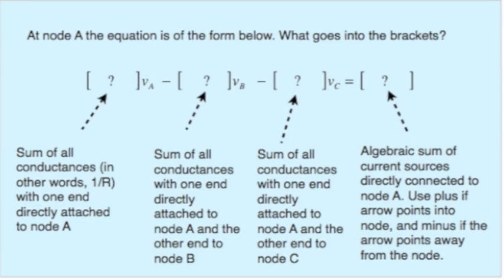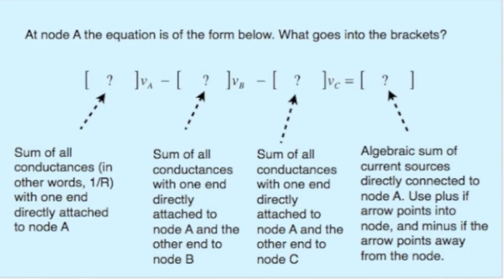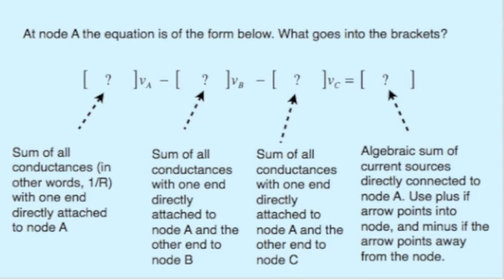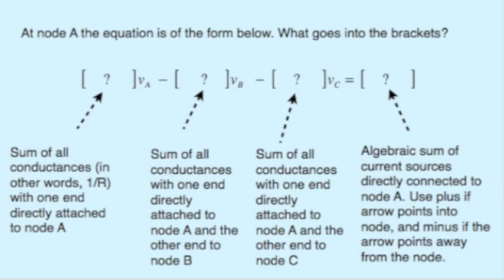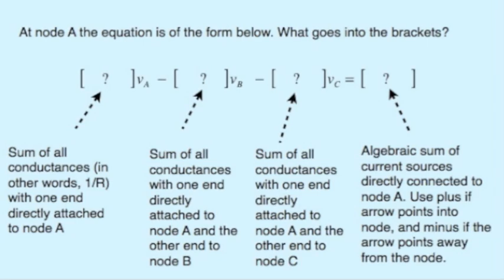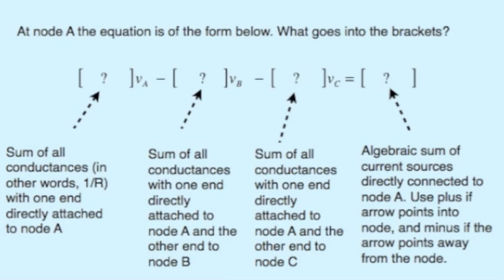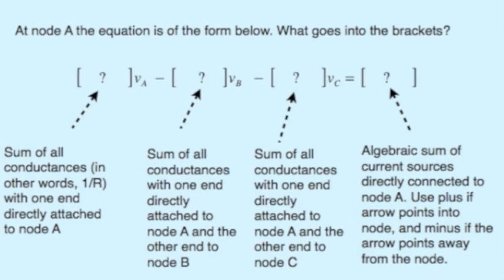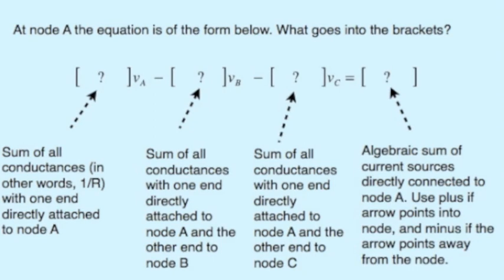The quantity times V sub A is the sum of all conductances, in other words, one over the resistance, that have one end directly connected to node A. What goes in front of the V sub B is the quantity obtained from the resistors that have one end on node B and the other end on node A, and likewise what goes in front of the term V sub C comes from the resistors that have one end on node A and one end on node C. On the other side of the equations, we look to see what current sources have one terminal tied directly to node A, and we obtain a quantity that comes from the algebraic sum of those current sources.